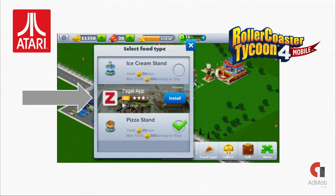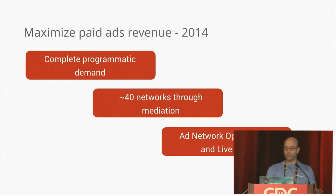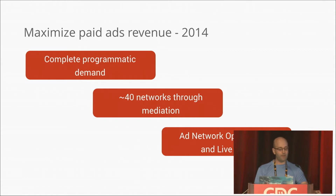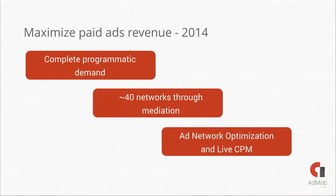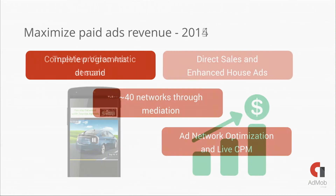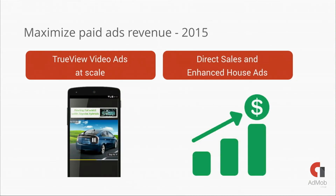Last but not least, we continue to drive paid ads demand at scale. In 2014, we grew programmatic demand, expanded mediation to around 40 networks, and launched automated live mediation across AdMob and a dozen other networks. In 2015, we are going to scale TrueView ads — video ads that the user can skip after five seconds — and we are introducing direct sales and programmatic deals within AdMob.